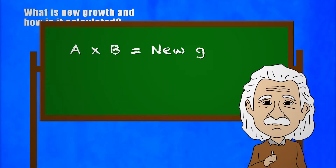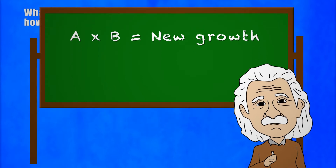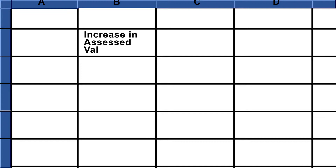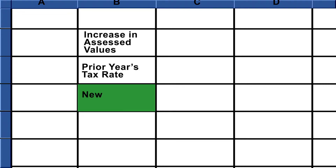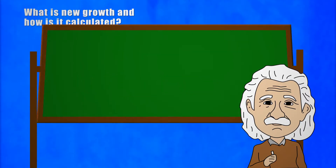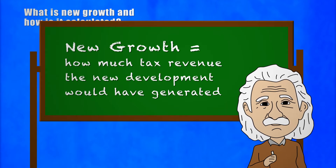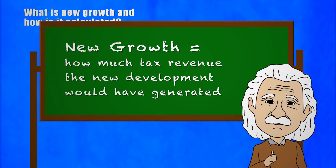The law sets out this formula for calculating the annual new growth factor. The extra assessed value added to the tax base due to new development is multiplied by the previous year's tax rate. This formula arrives at a dollar amount to be added to the levy limit as new growth — basically measuring how much tax revenue the new development would have generated if it had been taxed last year.